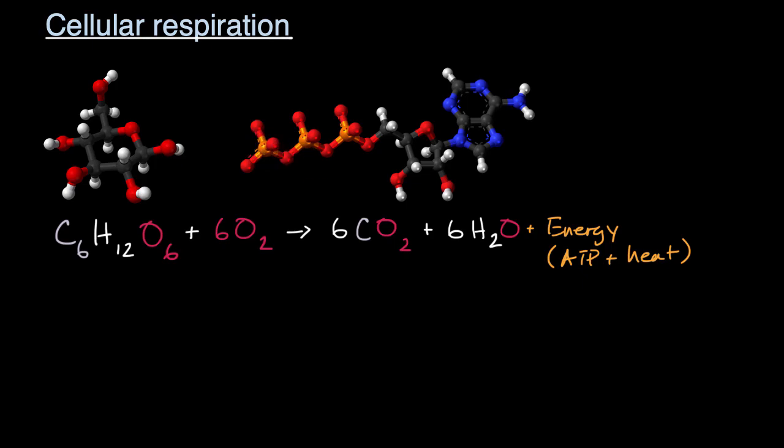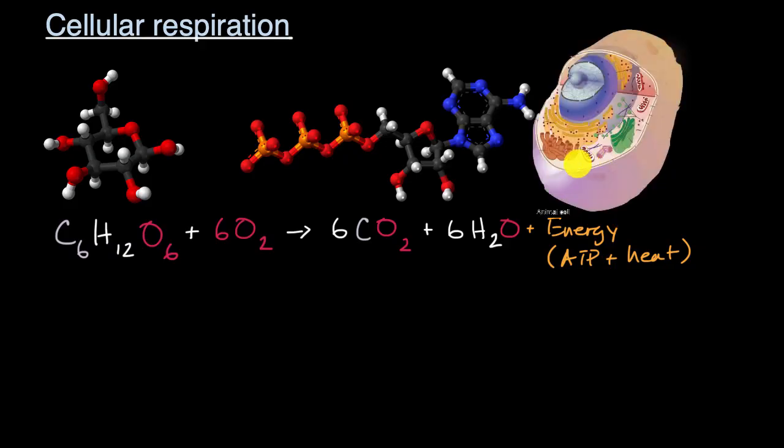Now to understand the steps of it, we will start in the cytosol of a cell, where a process known as glycolysis takes place. And glycolysis literally means the breaking of glucose.